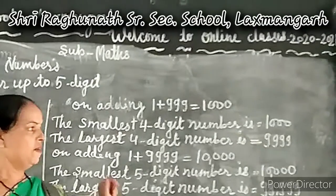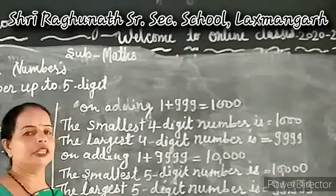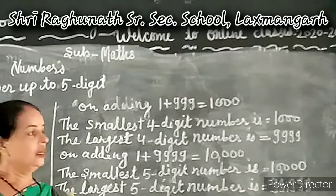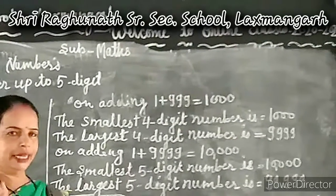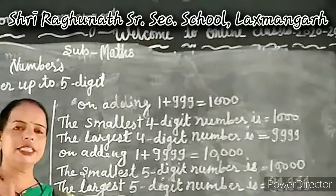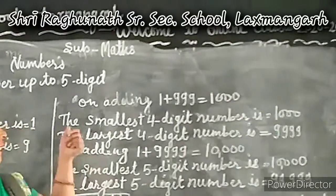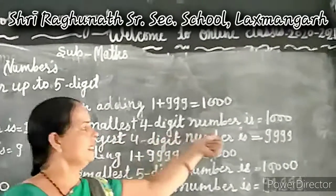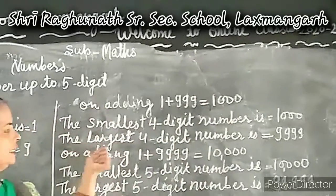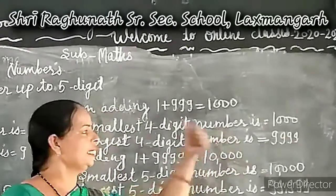The smallest number of four digits is 1,000, and the greatest four-digit number is 9,999. The smallest four-digit number is 1,000 and the largest four-digit number is 9,999.